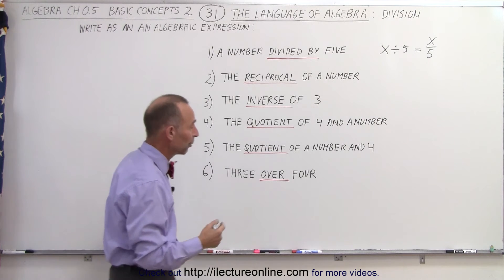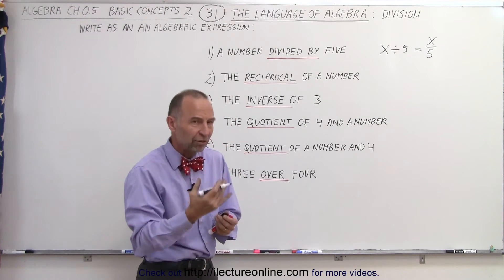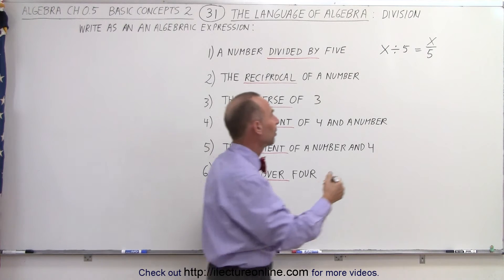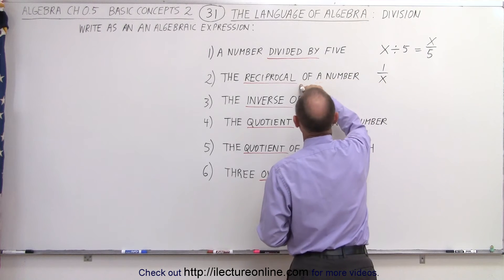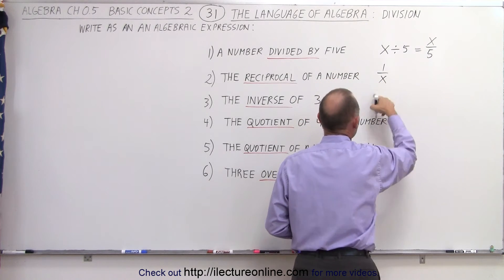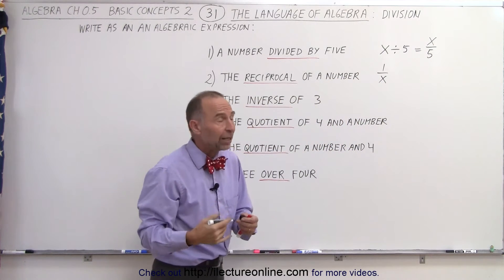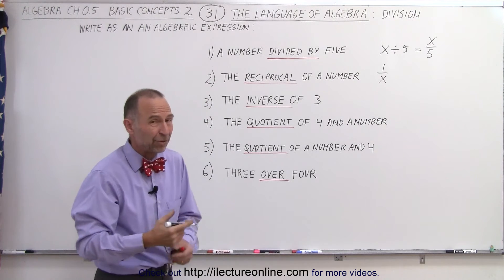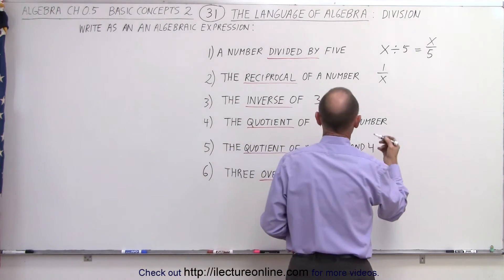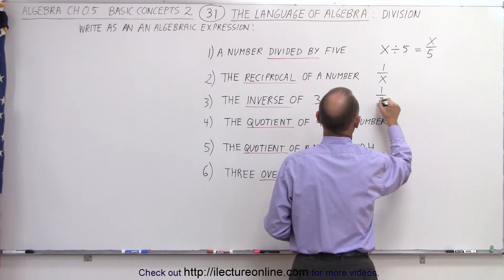The reciprocal of a number, so we write a number that's x. The reciprocal means 1 over x. That's the reciprocal of the number x, and that means we're dividing the number 1 by x. The inverse of 3 is the same as the reciprocal. So in this case, the inverse of 3, we write 1 over 3.